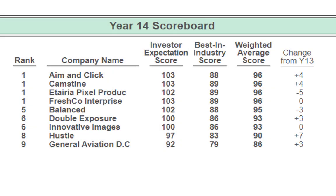Let's take a look at the year 14 scoreboard. Teams A, C, E, and F are all tied at 96. Team B is in fifth place at 95, just one point behind the leaders. Then we have teams D, I, H, and G. Team G, you're plus three so I'm proud of you — you're not going backwards at all. Really only two teams took a dip: team E at minus five and team B at minus three. Every point matters — if either of those teams hadn't taken a dip, they'd be number one for year 14.